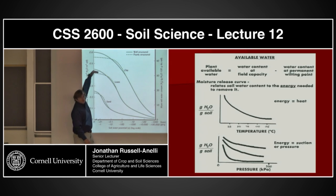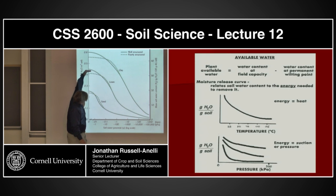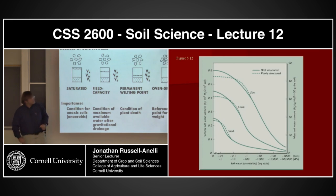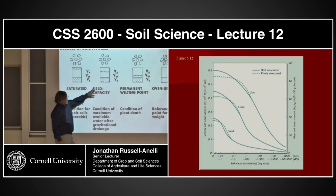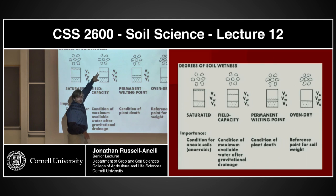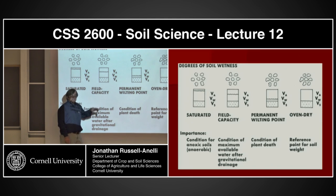As that volume of water decreases, the negative pressure is increasing. The maximum point — this is the field capacity — the maximum amount of water that can be stored or held in this volume of soil against gravity is field capacity.